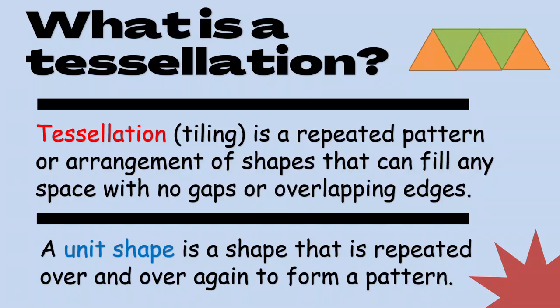Look at the example. Look at that figure. We use triangles, right? So, the unit shape in that pattern is a triangle. We use triangle to tessellate.